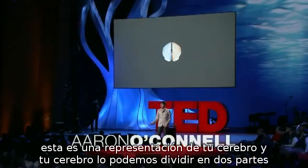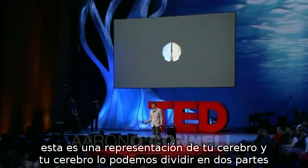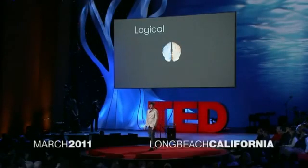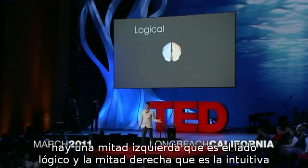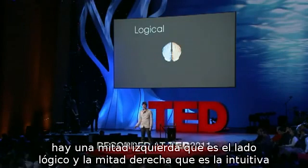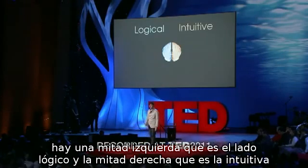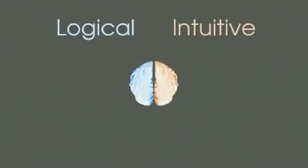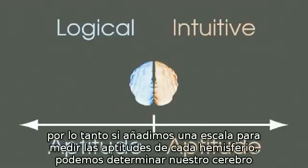This is a representation of your brain, and your brain can be broken into two parts. There's the left half, which is the logical side, and then the right half, which is the intuitive. And so if we add a scale to measure the aptitude of each hemisphere, then we can plot our brain.